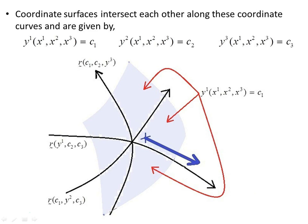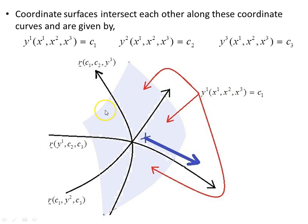Coordinate surfaces intersect along each of these coordinate curves and they're given by holding y1 constant. So all values for which y1 is equal to this constant will give us this surface here. y2 and y3 surfaces can be found similarly, but only one coordinate surface is shown on this diagram. An outward positively oriented normal is shown, indicating the positive direction the surface is oriented in — that's this surface here in blue. And that's our first coordinate surface by holding the y1 coordinate constant.